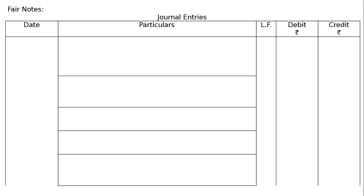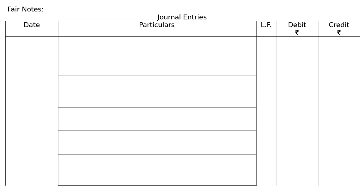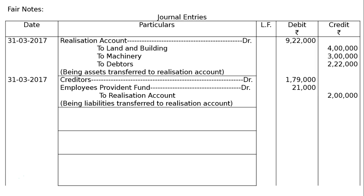Now for the journal entries — date is 31st March 2017. First entry: transfer of assets to realization account — realization account debited Rs. 9,22,000; to land and building Rs. 4 lakhs, to machinery Rs. 3 lakhs, to debtors Rs. 2,22,000. Being assets transferred to realization account. Second entry: creditors account debited Rs. 1,79,000, employees provident fund account debited Rs. 21,000, to realization account Rs. 2 lakhs. Being liabilities transferred to realization account.